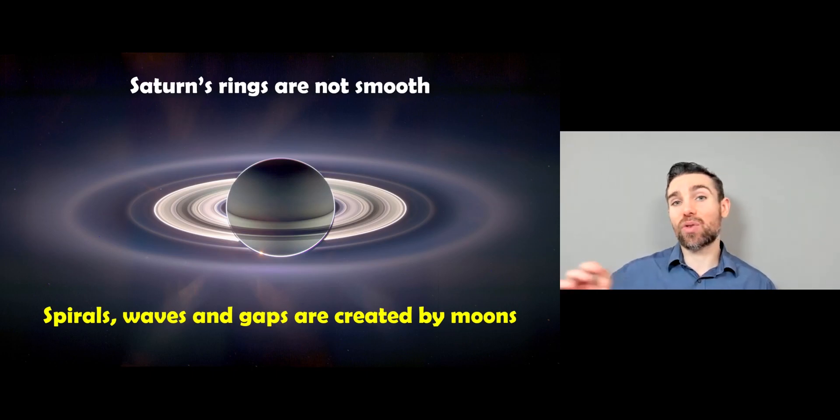And we can use the way that they interact with the rings and also the other way around as well to calculate the mass of the moon. We can also calculate properties of the ring if we know the mass of the moon, we can work out the actual interactions between the two.